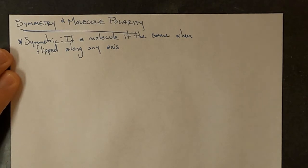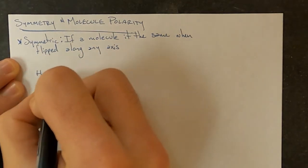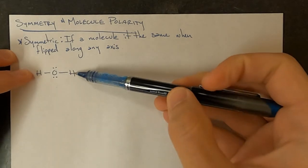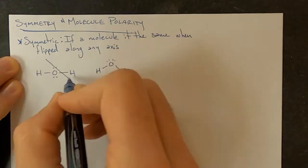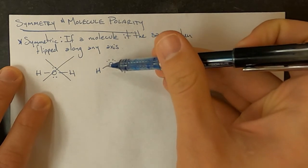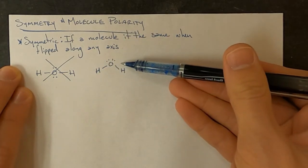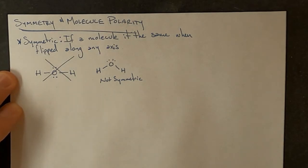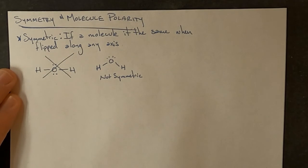For a molecule to be symmetric in 3D, it has to be the same if flipped along any axis. We looked at model kits and 3D references because you might draw a water molecule and it would look symmetric — the left and right sides look the same, top and bottom look the same. However, when you build it, it ends up bent. It's only through building it or using a 3D reference that you see water is bent and not symmetric — it may be the same left and right, but not top to bottom. A molecule may have polar bonds, but if it's symmetric, those polar bonds cancel each other out.